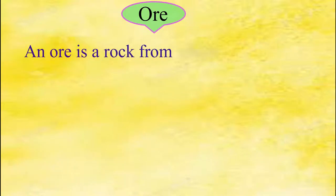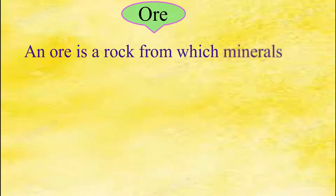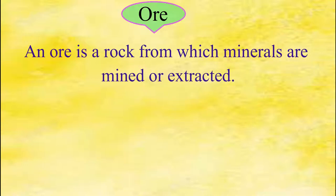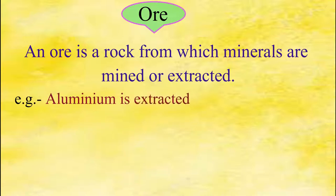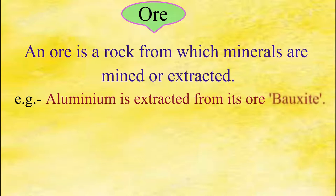An ore is a rock from which minerals are mined or extracted. For example, aluminium is extracted from its ore, bauxite.